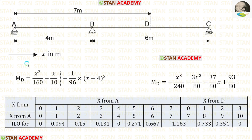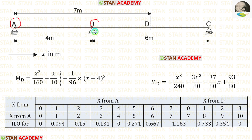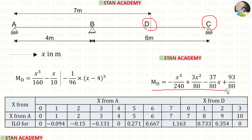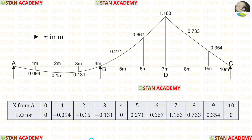Now let us calculate the ordinates. From point A to point D, we have to use this formula, but we must be careful: from point A to point B, we should not consider the second portion; only take the first part. From point B to point D, we take the whole formula. To calculate the ordinates from point D to point C, we use the other formula. Using these formulas, we calculate all ordinates and then use them to make the influence line diagram. This ends the session. Thank you for watching.